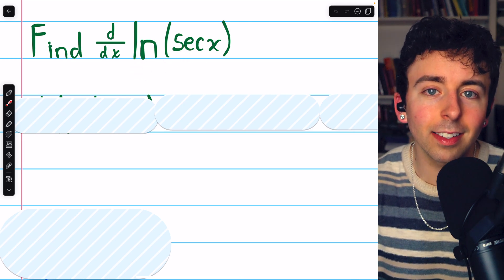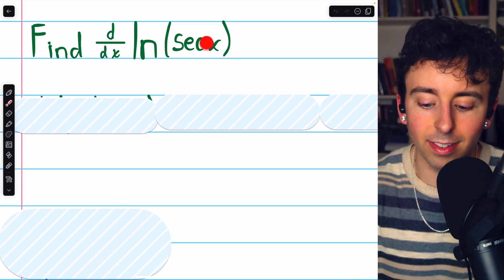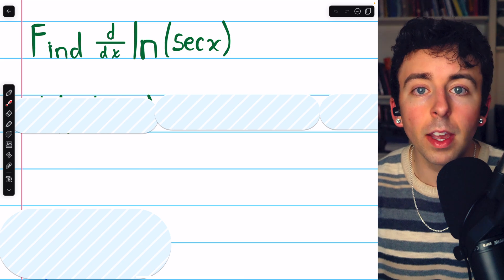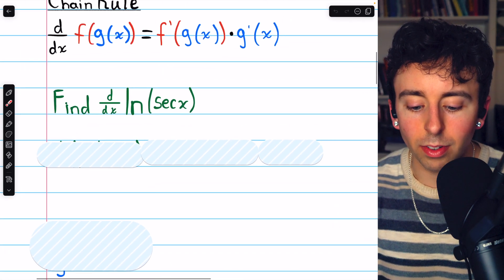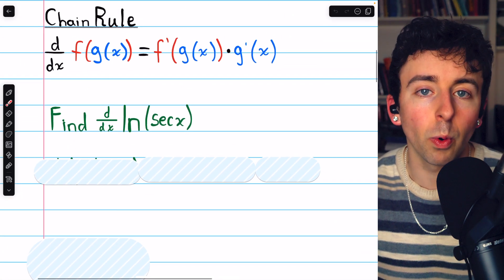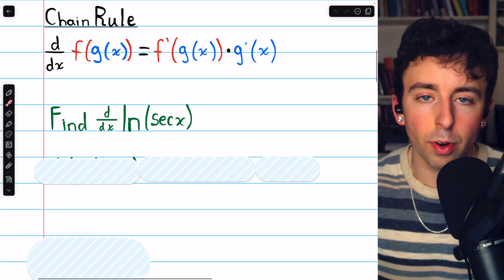The natural log of secant x is a composite function. It's secant inside the log function. So to take its derivative, we have to use the chain rule, which I've written here for your reference. f prime of g times g prime.